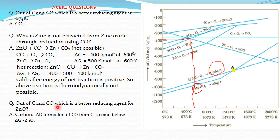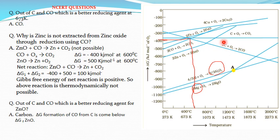Third question: out of carbon and carbon monoxide, which is a better reducing agent for ZnO? Using the shortcut — carbon monoxide comes above the line of ZnO, so we cannot use carbon monoxide. But carbon, after a certain temperature, comes below the line of ZnO. So we can use carbon as a reducing agent for reducing ZnO at high temperature.